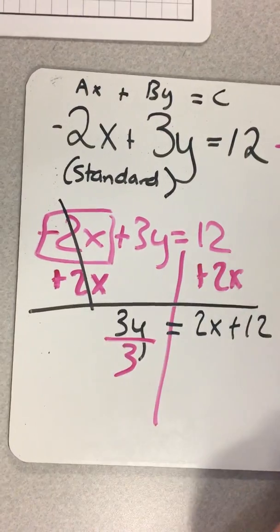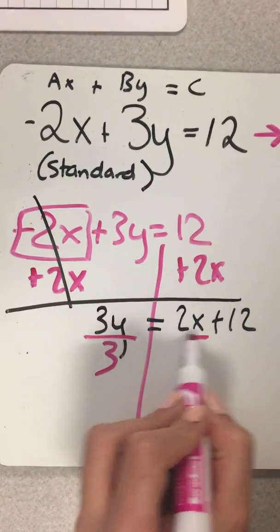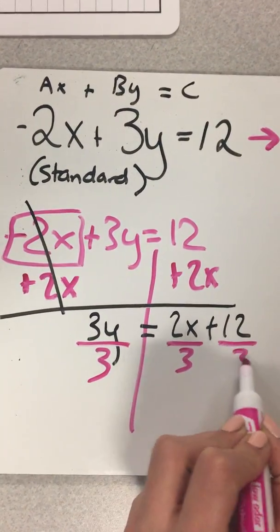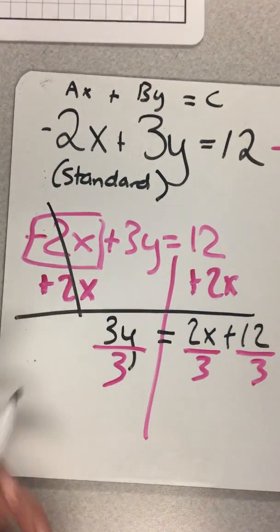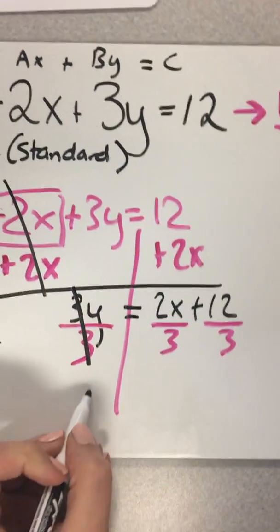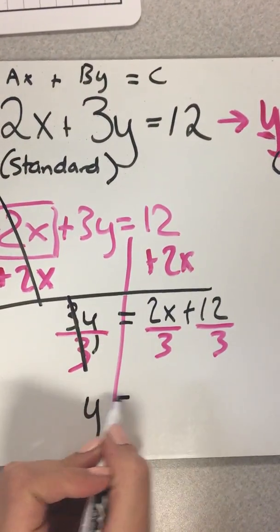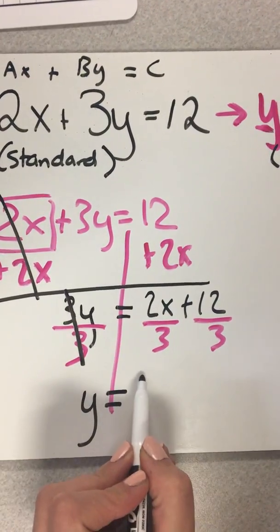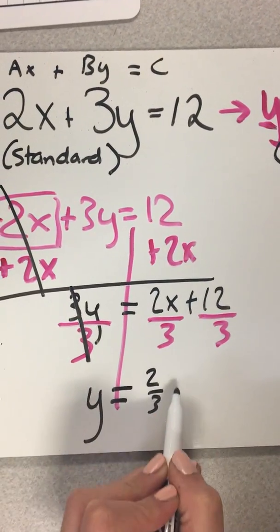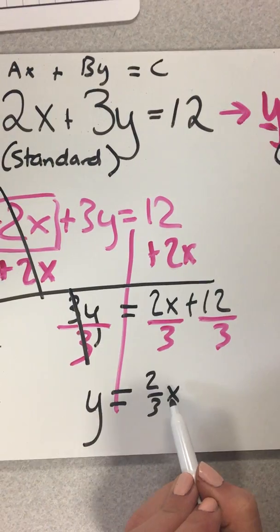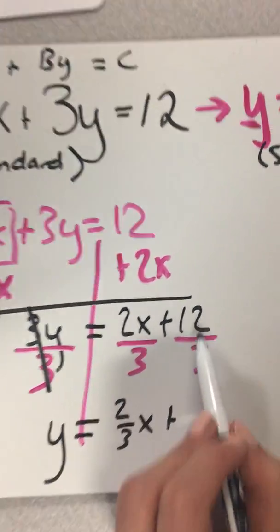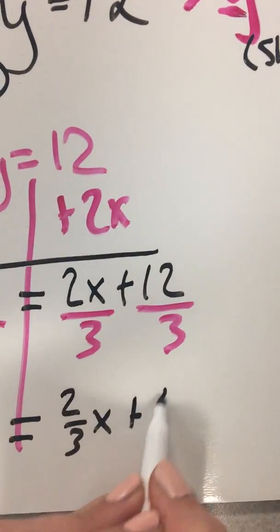And remember, what we do to one side has to do the other side. So I'm going to divide everything on this side by 3 as well. And so this cancels out. And I'm left with y, my equal sign. I'm left with 2 divided by 3. That x is still there. And then 12 divided by 3. But then you calculate it, you're going to get 4.